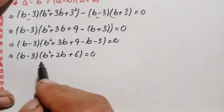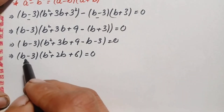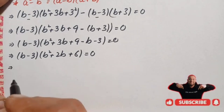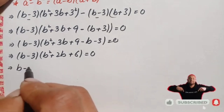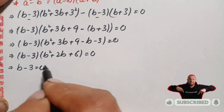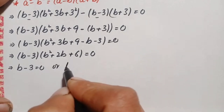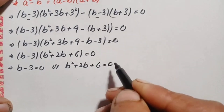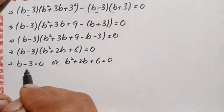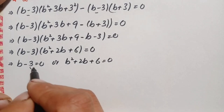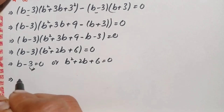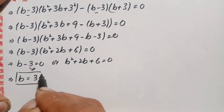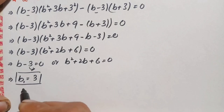Since the product of these two expressions is zero, either one can be zero. This gives us two equations: b minus 3 equals 0, or b squared plus 2b plus 6 equals 0. From the first linear equation, moving negative 3 to the right gives our first real solution: b₁ equals 3.